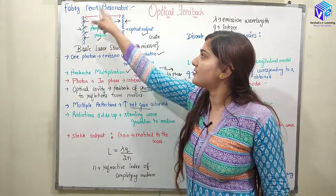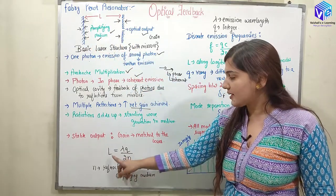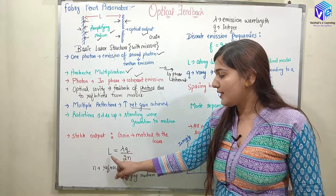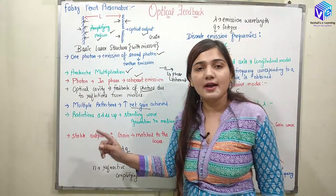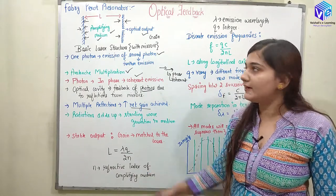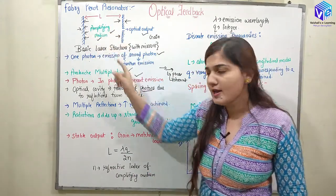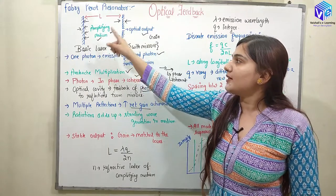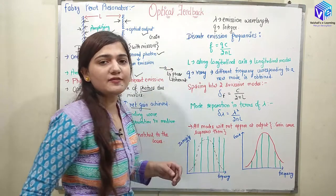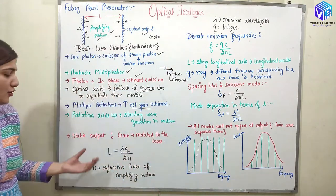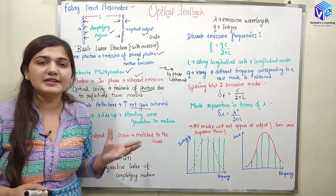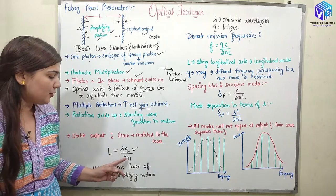This length of the cavity can be related to various parameters. Specifically, L is equal to λq divided by 2n, where n is the refractive index of the amplifying medium, λ is the emission wavelength, and q is some integer. This is how we can find out the length — the length should be an integer multiple of the wavelength divided by 2n.